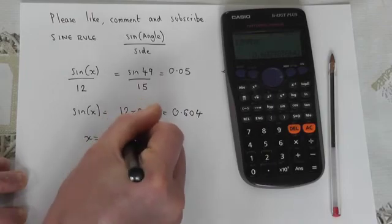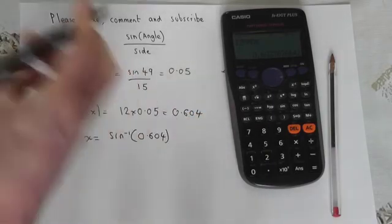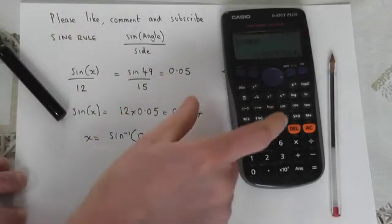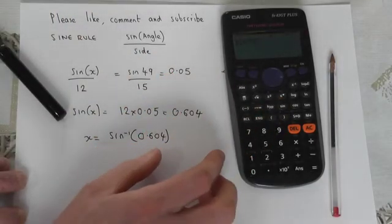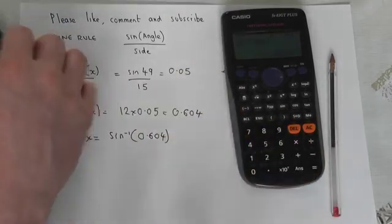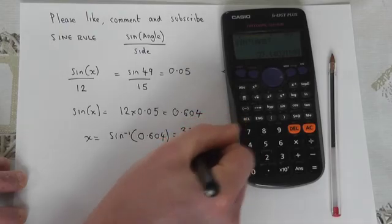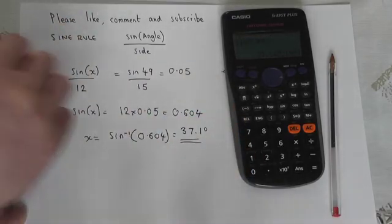So we do the inverse sine of this decimal. So we press shift sine of the accurate decimal of the answer and the angle is 37.1 degrees.